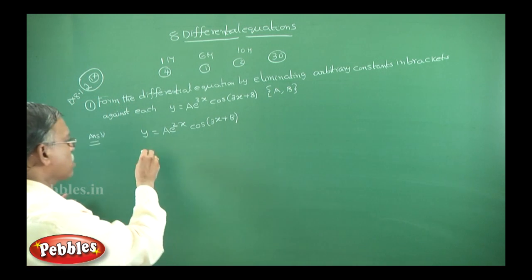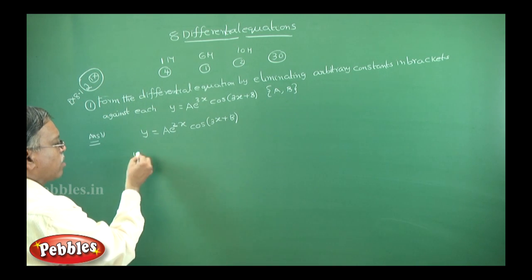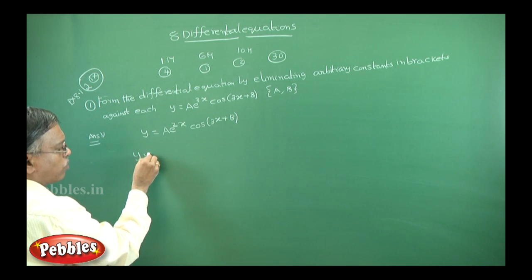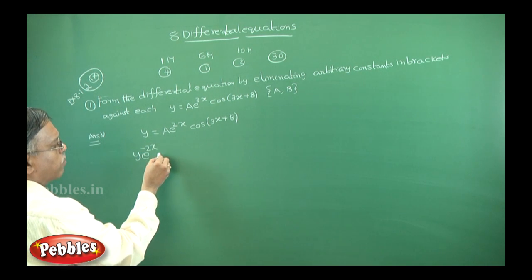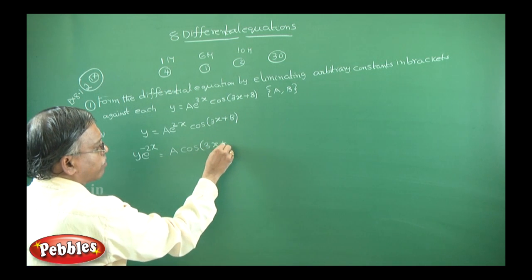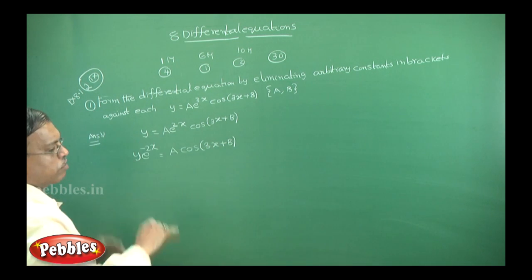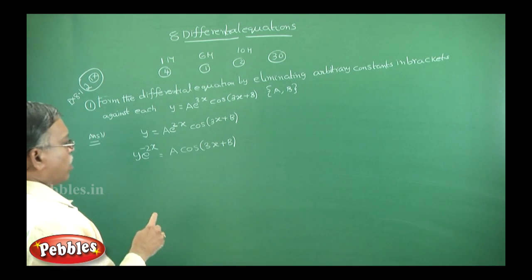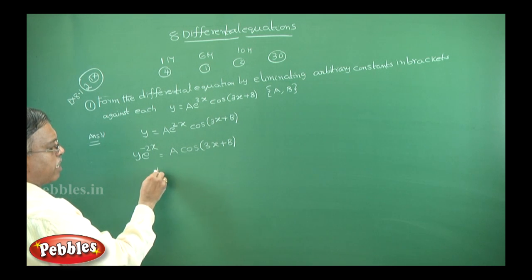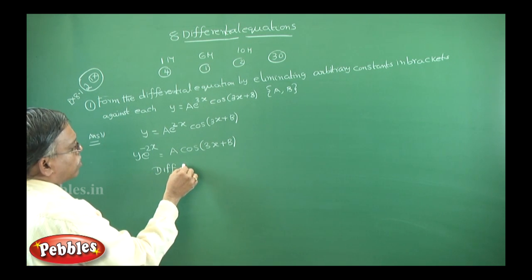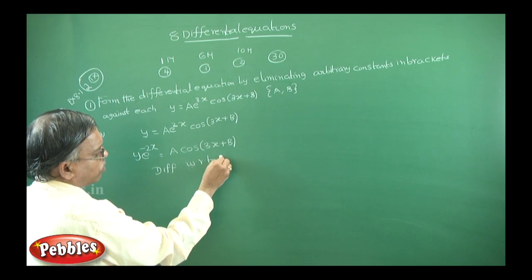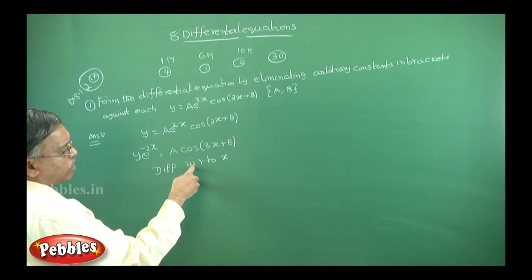Listen carefully. First step: bring e^(2x) to the other side, so divided by e^(2x) gives e^(−2x). So y·e^(−2x) = a·cos(3x + b). I am not differentiating at this step — I am just rearranging the given equation. Next, I want to eliminate arbitrary constants a and b, so differentiating with respect to x one time.